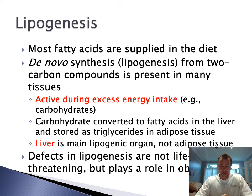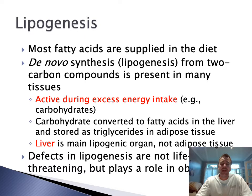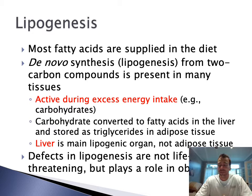When we talk about lipids being made — lipogenesis — most fatty acids that we get are supplied in the diet, so we don't always need to have lipids being made in our body. However, de novo synthesis or lipogenesis from two-carbon compounds is present in many tissues. This is active during excess energy intake. When we have a lot of carbohydrates being taken in, our body needs to store this energy, so carbohydrates are converted to fatty acids in the liver and stored as triglycerides in the adipose tissue. The liver is the main lipogenic organ, not adipose tissue — the adipose tissue is just to store it, the liver is used to make it.